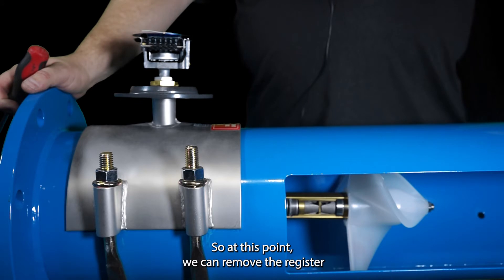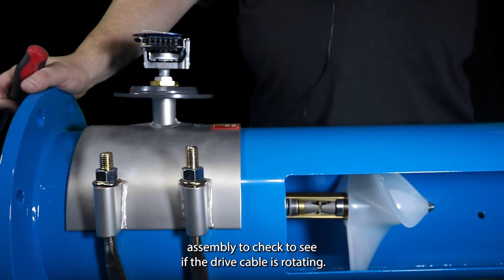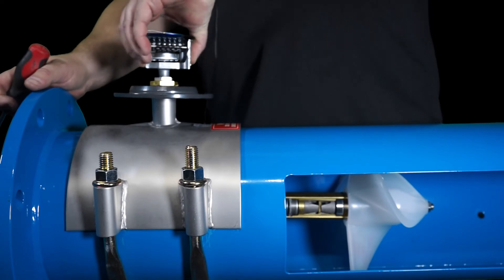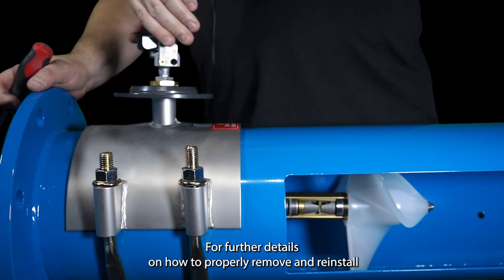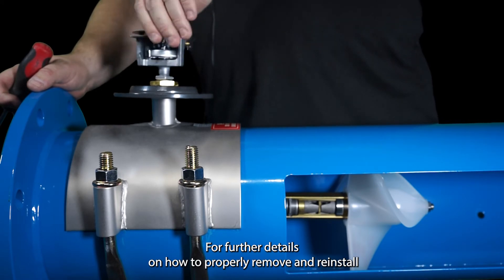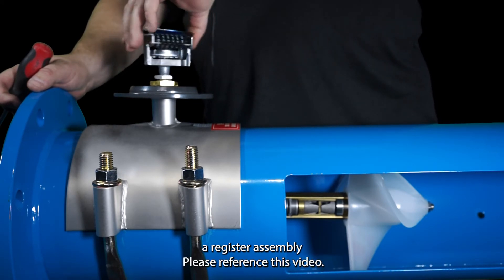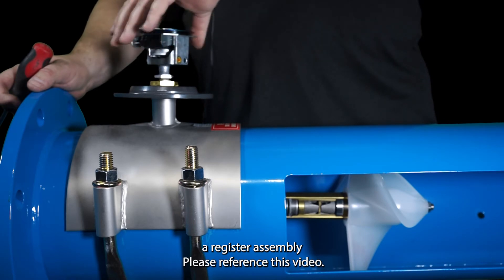So at this point we can remove the register assembly to check to see if the drive cable is rotating. The register assembly will unthread like a light bulb. For further details on how to properly remove and reinstall a register assembly please reference this video.